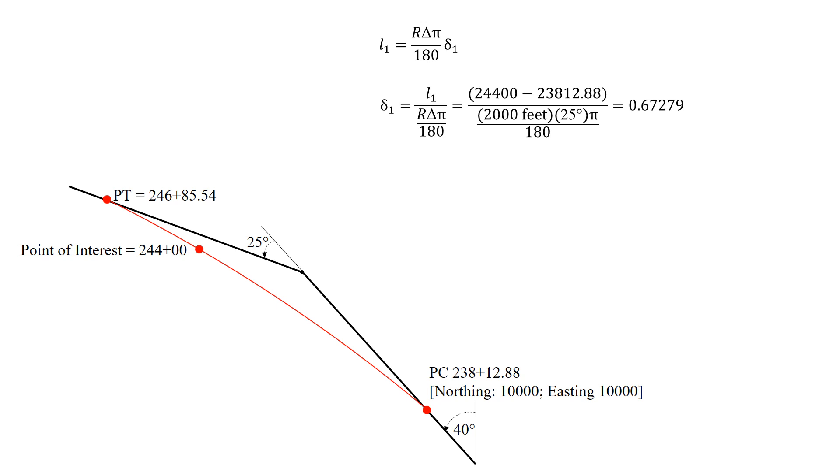So we're going to plug in our values here for the length from the PC to our point of interest. That's on the numerator. In the denominator, we're going to put in the radius 2,000 feet times our delta 25 degrees times pi divided by 180. And we find lowercase delta of 0.67279.